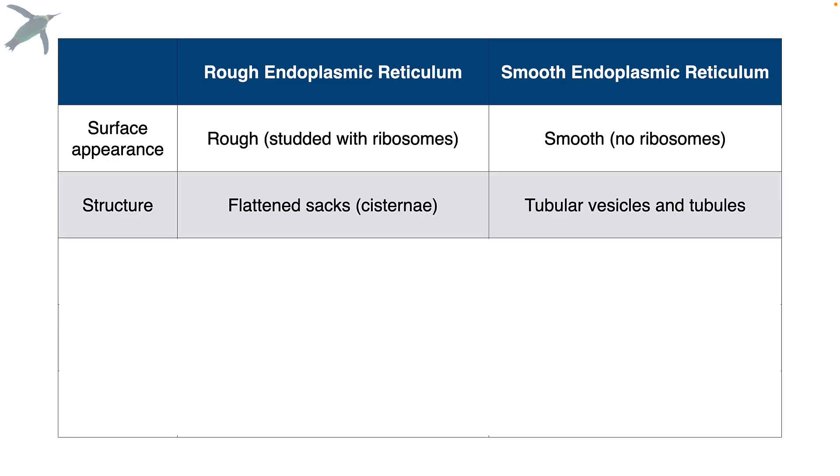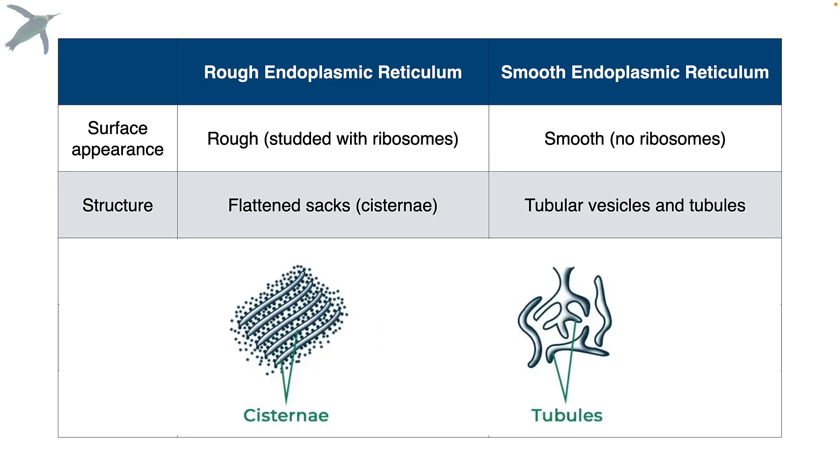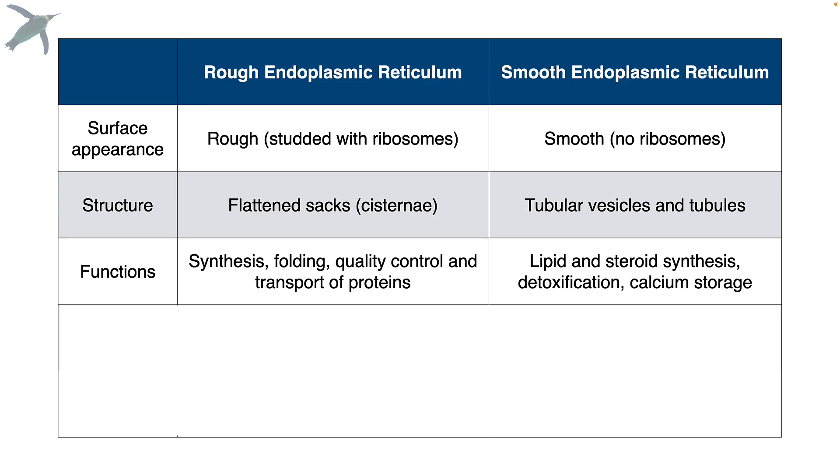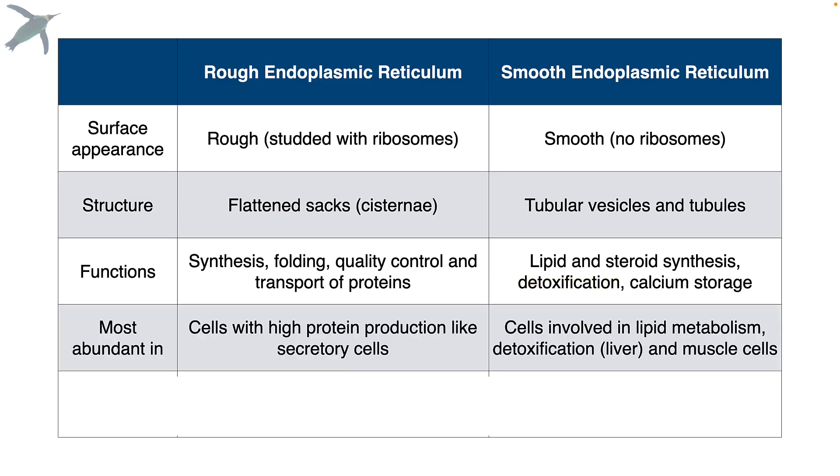So the structure of the rough ER we call cisternae. Those are flattened sacks. A cistern is like a reservoir, whereas smooth ER is more tubular. In terms of function, rough ER is all about protein, whereas smooth ER is all about lipids, detox, and in muscle cells, also calcium storage. Rough ER is most abundant in cells that make a lot of proteins. That makes sense. And smooth ER is abundant in cells that do lipid metabolism, detoxification, so that would be especially like the liver, and muscle cells.